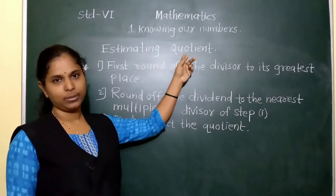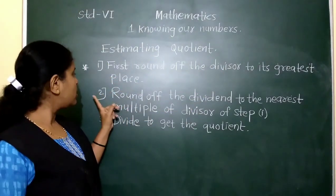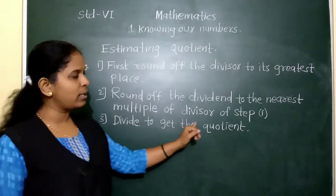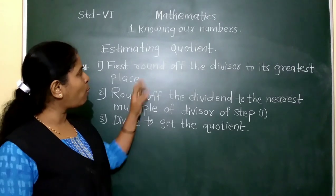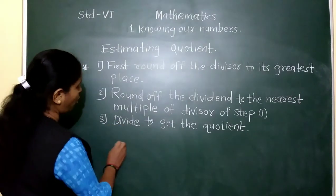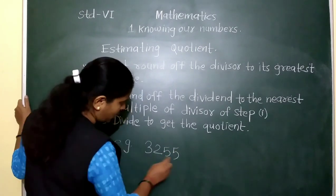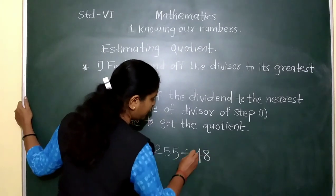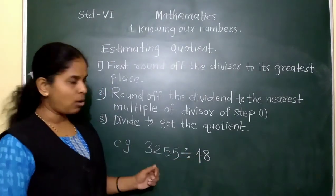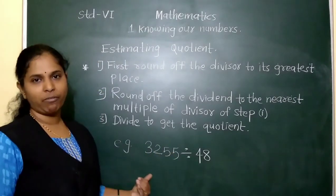Next is estimating quotient. Rules: first, round off the divisor to its greatest place. Second, round off the dividend to the nearest multiple of the rounded divisor. Third, divide to get the quotient. Students should know what is meant by divisor and dividend. For example, in 3255 divided by 48: 48 is the divisor, and 3255 is the dividend — the number we have to divide.